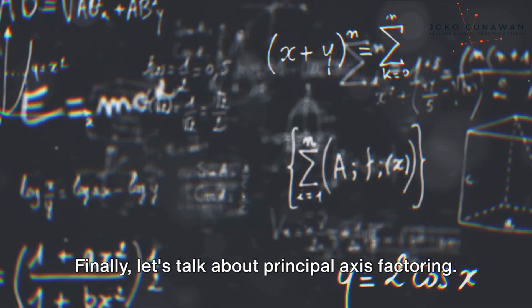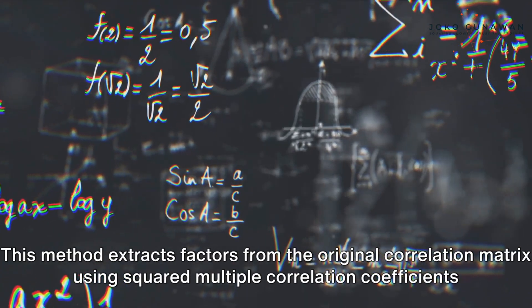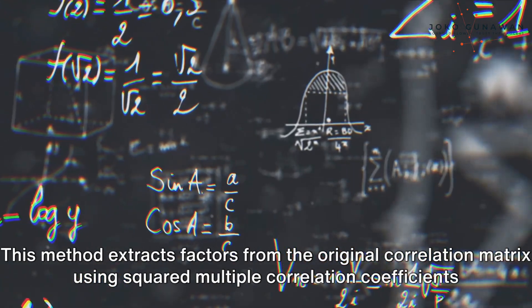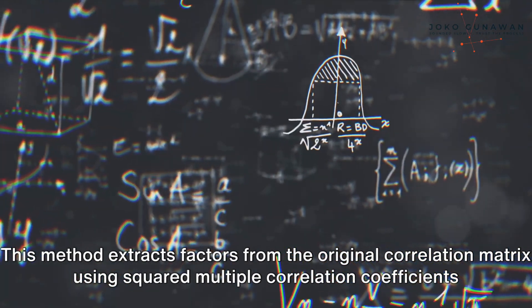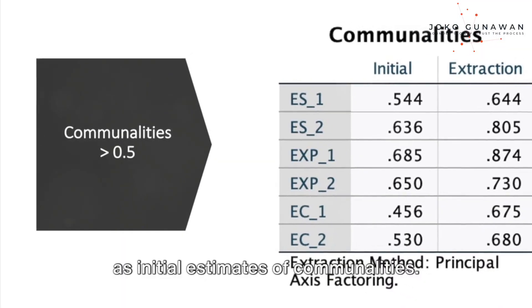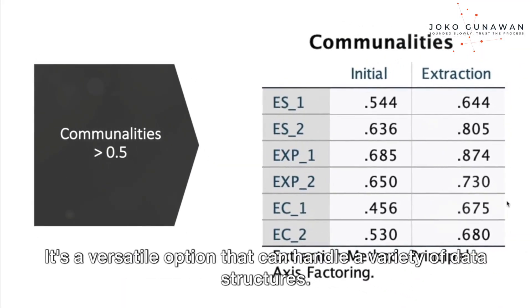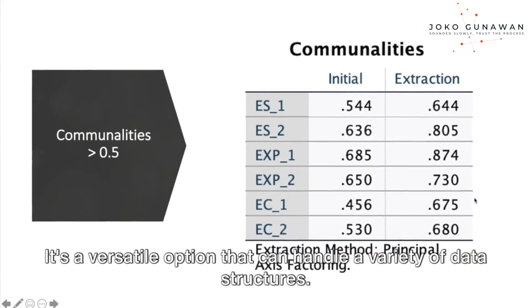Finally, let's talk about principal axis factoring. This method extracts factors from the original correlation matrix using squared multiple correlation coefficients as initial estimates of communalities. It's a versatile option that can handle a variety of data structures.